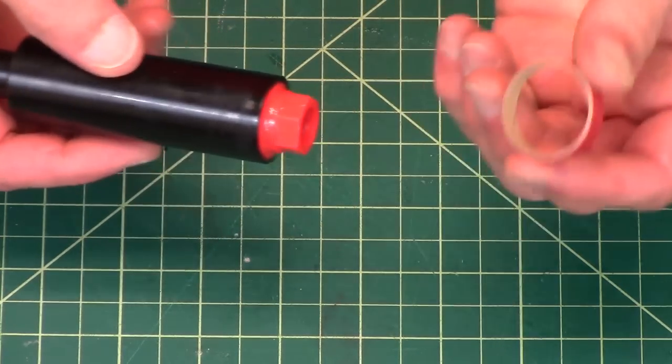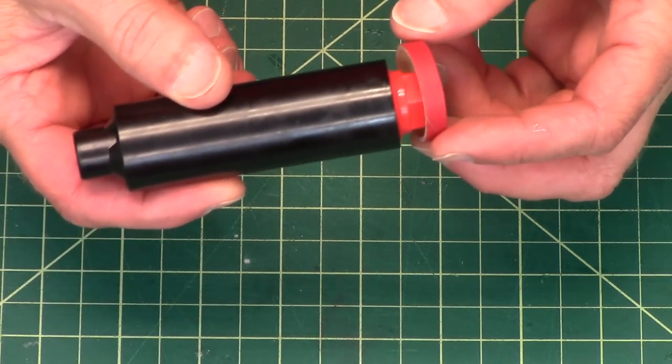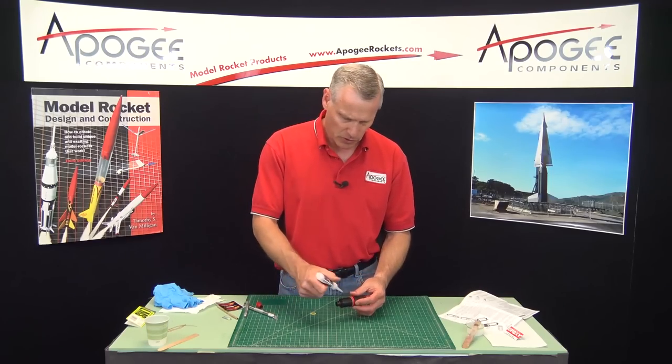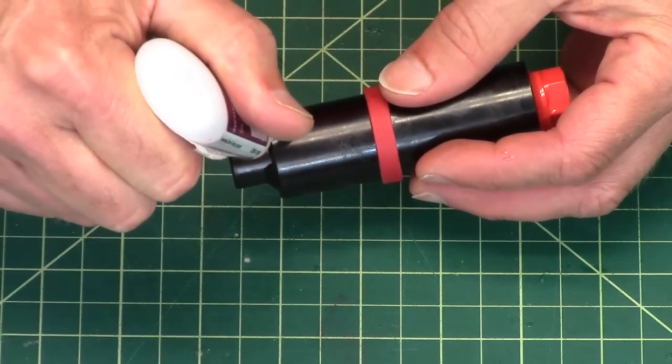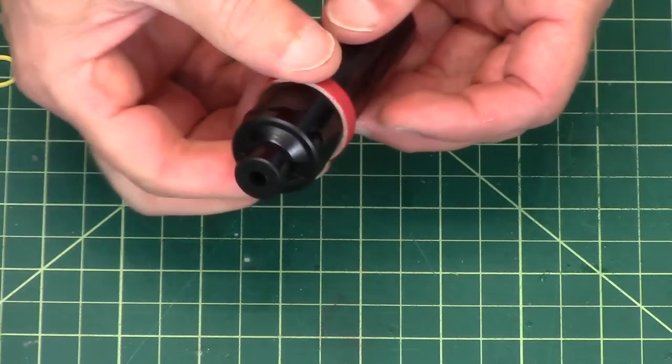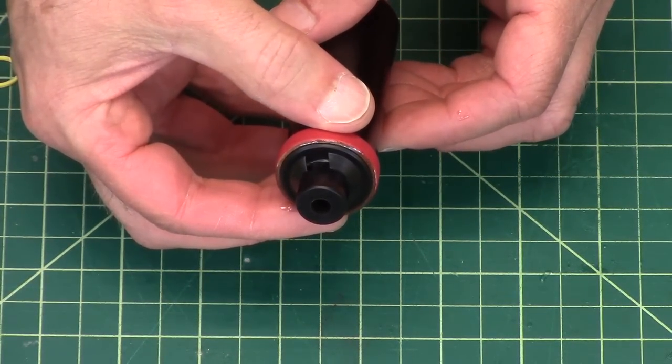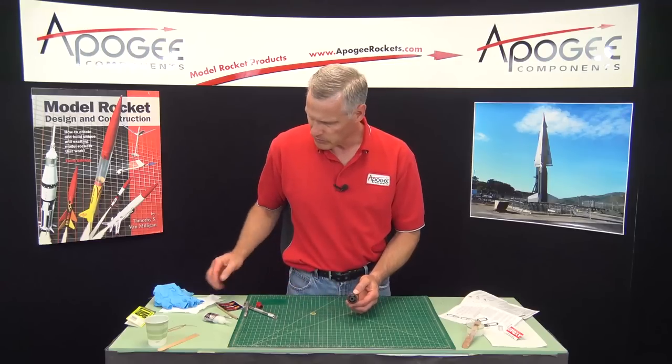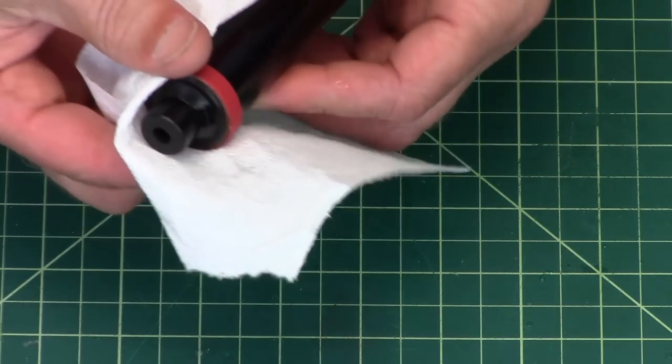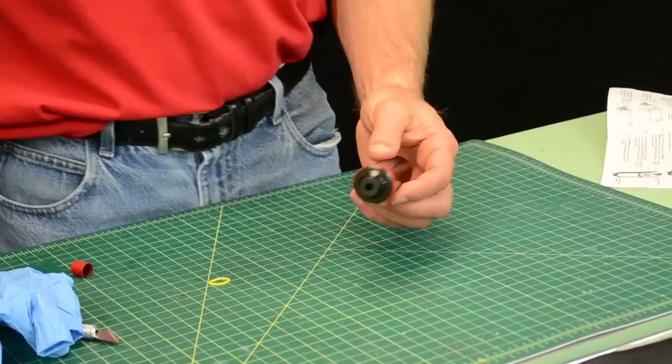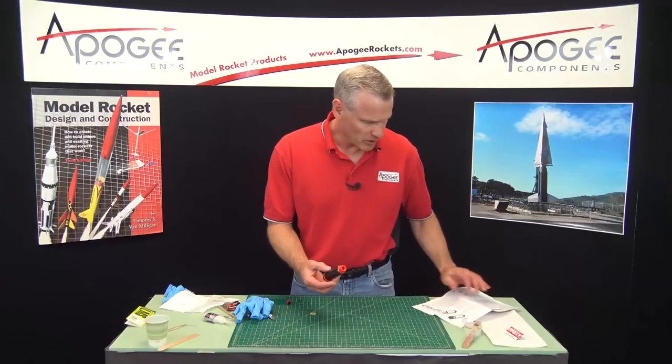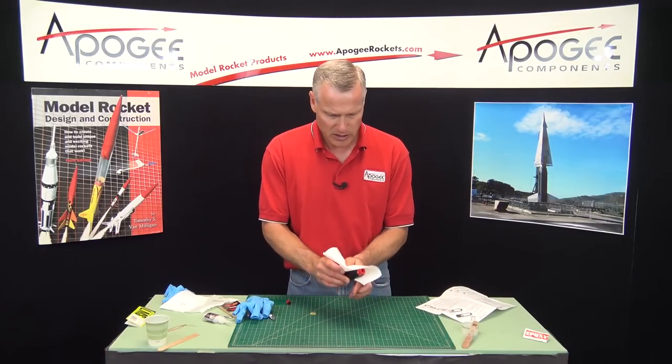This is the thrust ring. These single use casings don't really have a thrust ring built into it. So that's going to be glued on right here. And this one you can use super glue. I've got some thick super glue here. Just put that on there. This is the thrust ring that prevents the rocket motor from sliding up into the rocket. I can feel a little bit of epoxy on the outside of the case. It's okay.